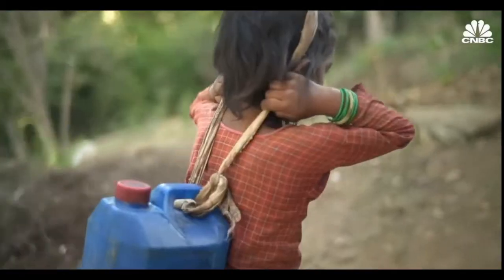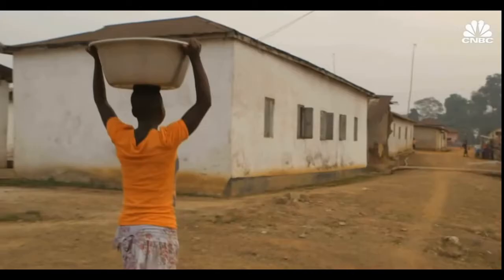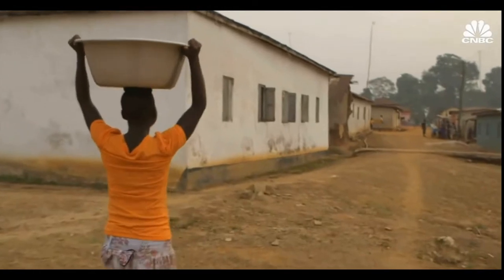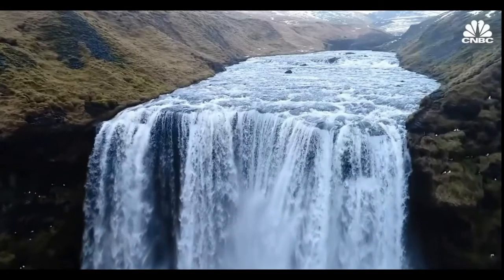It is estimated that by 2050, more than half of the globe's population will live in a water-stressed area. But how can this be with the world covered in water?